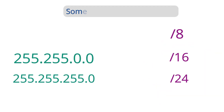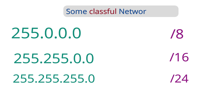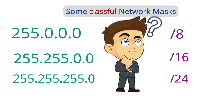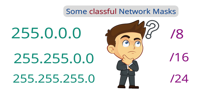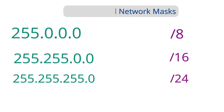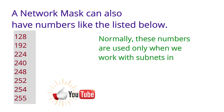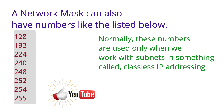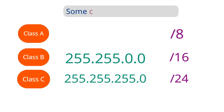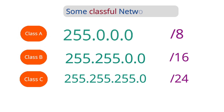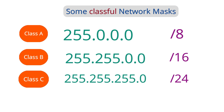Here we have some examples of network masks. If you are wondering why we write 255 in the masks, we not only have the option to write 255. We can also write 128, 192, 224, 240, 248, 252, 254, and 255 in the masks. But when we work with IP addresses of class A, B, and C, we will always use the masks given in the examples.